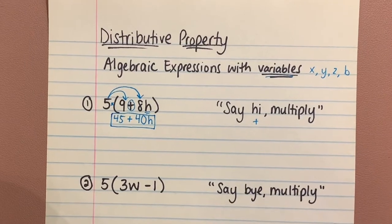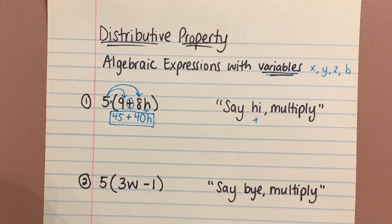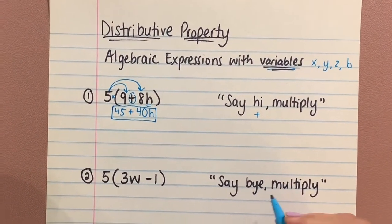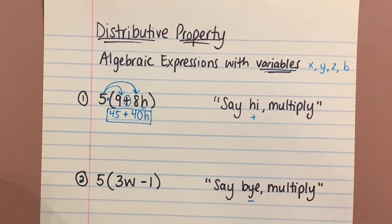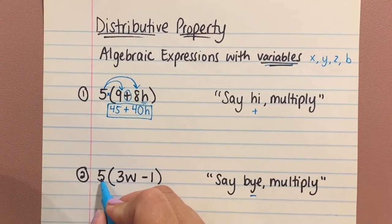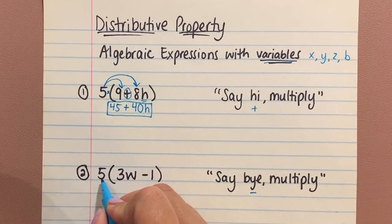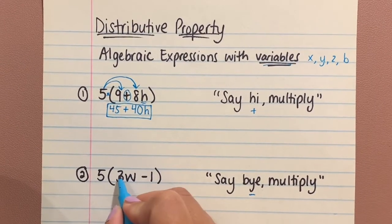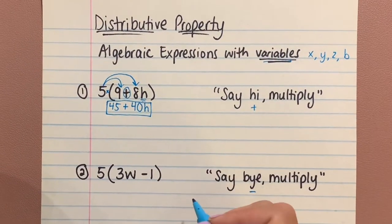If you look at number two, it's the same thing except this time we have 'say bye, multiply.' That was because it was a minus sign. You have a five on the outside of the house again this time. On the inside, you have three W minus one.